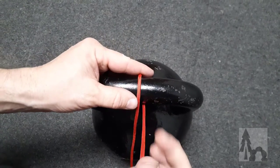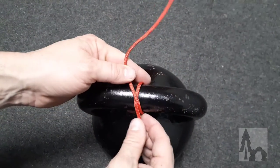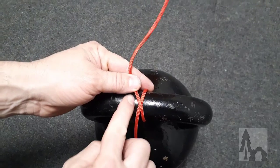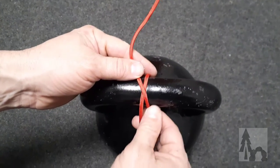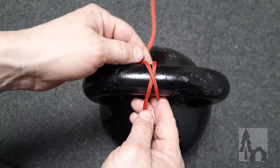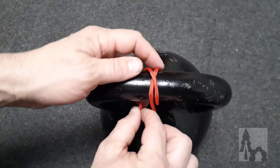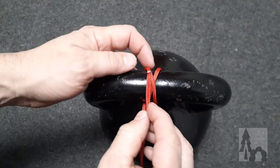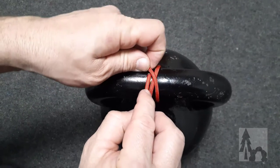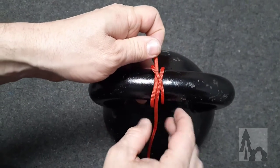I come around and with my free end I'm going to cross over my standing end on the structure I'm hitching to, and so it kind of makes that X. I'm going to go around the object again, and then this time my free end is going to go under itself, under the last turn that it just crossed.